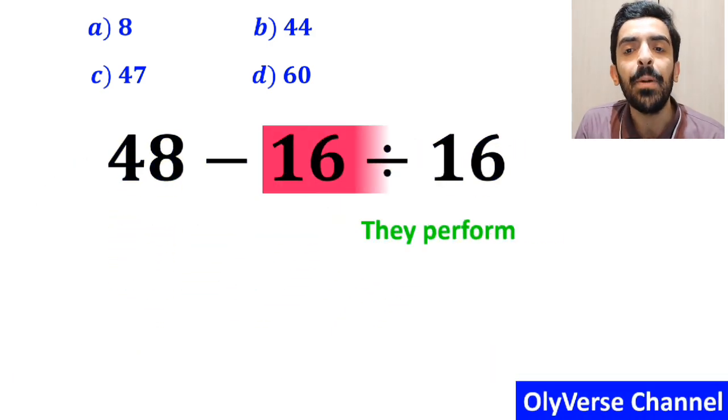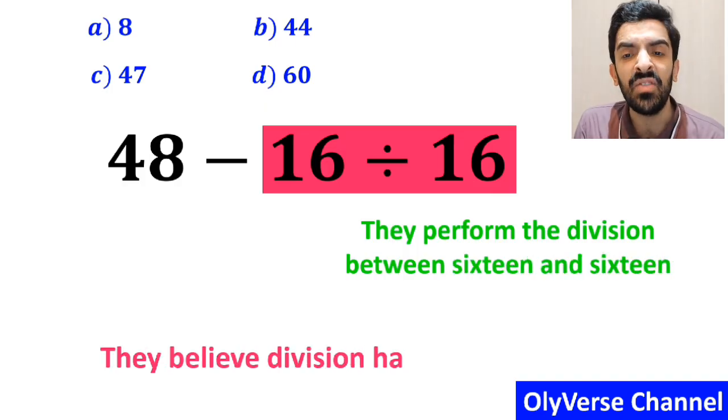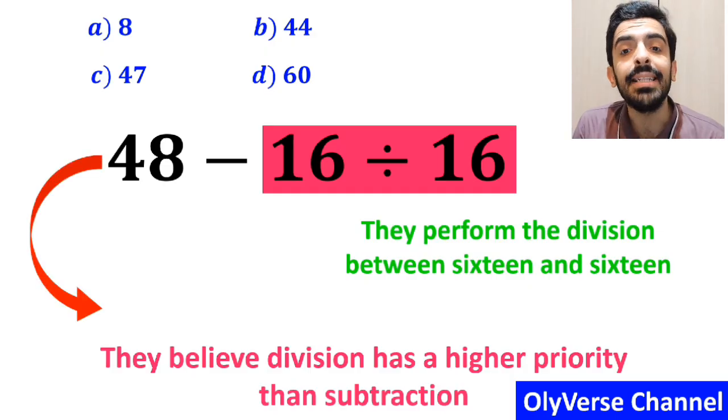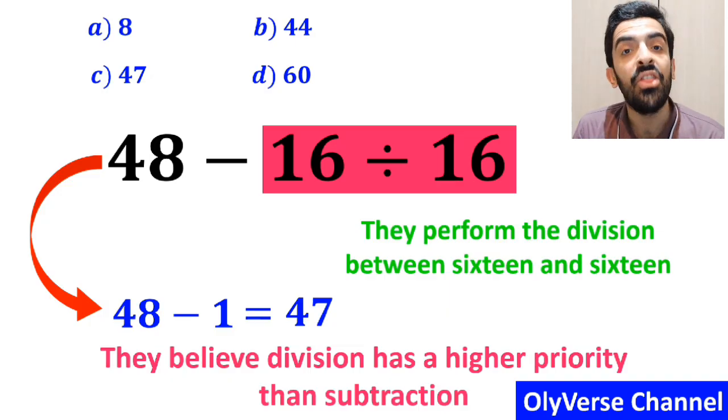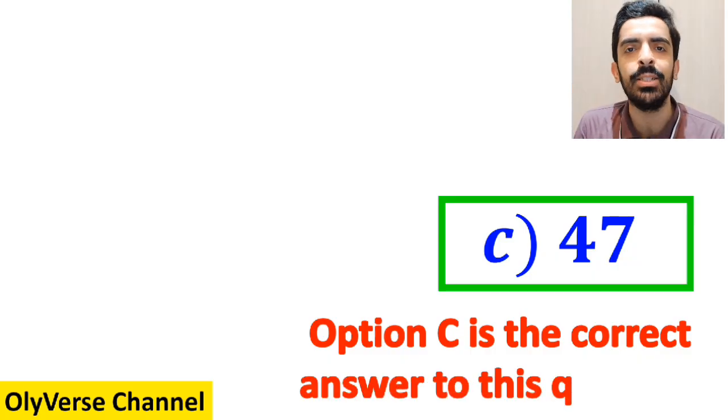In the next step, they perform the division between 16 and 16, since they believe division has a higher priority than subtraction. And they simplify this expression to 48 minus 1, which finally gives them the answer 47. Then, without any hesitation, they quickly say that option C is the correct answer to this question.